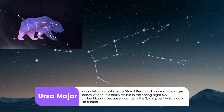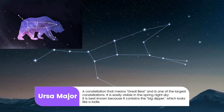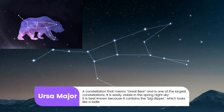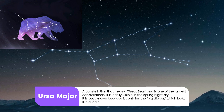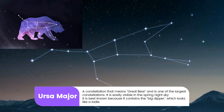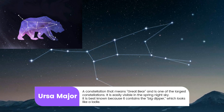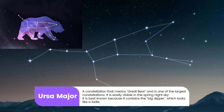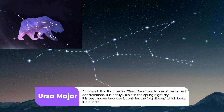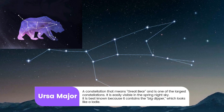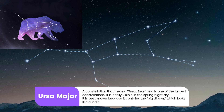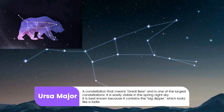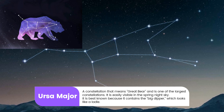11. Ursa Major: A constellation that means Great Bear and is one of the largest constellations. It is easily visible in the spring night sky. It is best known because it contains the Big Dipper, which looks like a ladle.